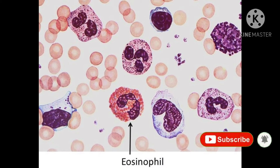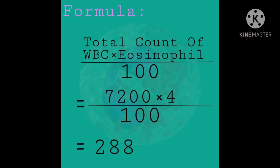The formula for AEC is: total count of WBC multiplied by the eosinophil percentage, divided by 100. For example, here 7200 is the total count of WBC and 4 is the percentage of eosinophil counted in the dose field. The calculation gives 288, expressed in per cubic millimeter.